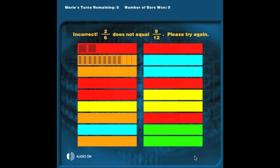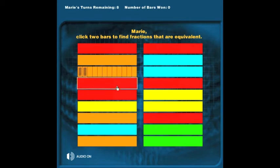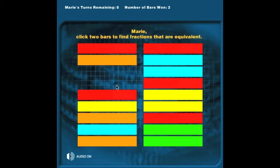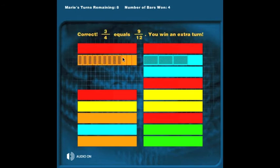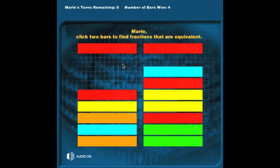They're trying to find two bars whose fractions are equal. Two bars have been found whose fractions are equal, so the player gets a bonus turn. The play continues with the player trying to win all eighteen bars in the given number of turns for the level of the game.